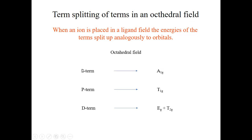The same applies to other terms. A P term behaves like p orbitals in an octahedral field — p orbitals have T1g symmetry, so a P term also has T1g symmetry and does not split. The S term, like the s orbital, always has totally symmetric A1g symmetry. For the F term, it splits into T1g plus T2g plus A2g in an octahedral field.